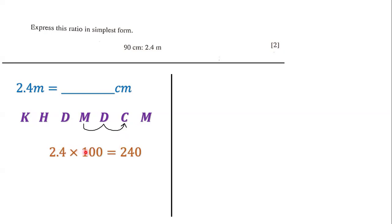Since we move over twice to the right, we have to take 2.4 and multiply it by 100. So 2.4 multiplied by 100 is going to be equal to 240. And so we have 2.4 meters is equal to 240 centimeters.